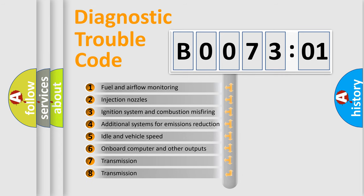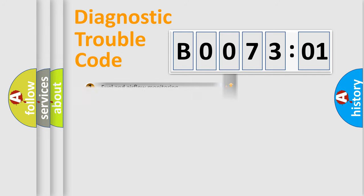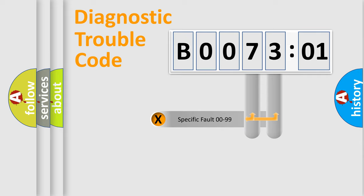The third character specifies a subset of errors. The distribution shown is valid only for the standardized DTC code. Only the last two characters define the specific fault of the group.